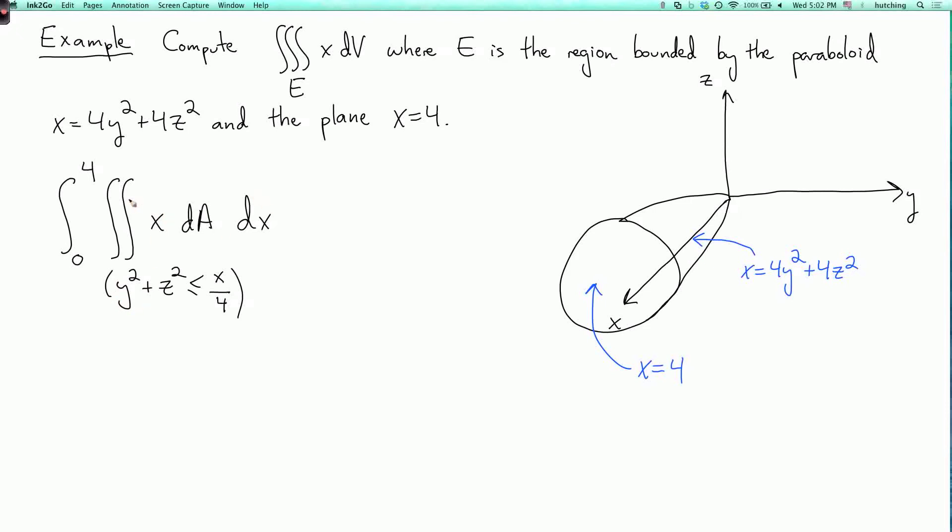Now we can further write this double integral of x dA as an iterated integral over y and z. However, in this particular example, there's a shortcut. Because we notice that x is a constant inside this double integral. So if you integrate a constant over a two-dimensional region, you just get the area of the region times the constant. So this is the integral from 0 to 4 of x times the area of the region y squared plus z squared is less than or equal to x over 4, dx.